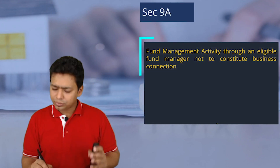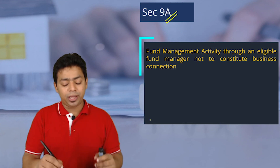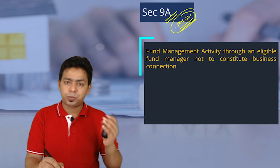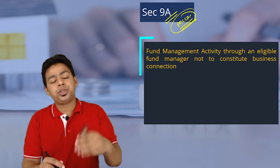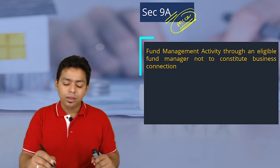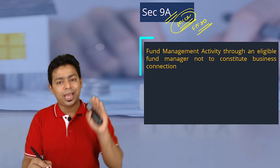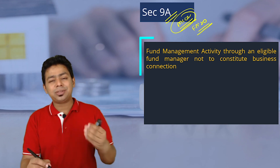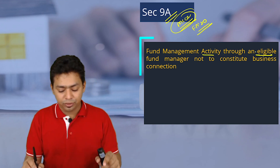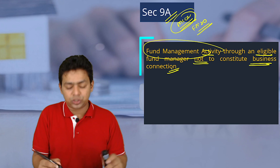So far, the institutes have not targeted Section 9A in exams. It is possible it may come in the form of a multiple choice question, because there are a lot of terminologies and numbers to remember. In Finance Act 2020, some of the provisions, numbers, and conditions of Section 9A were amended, and therefore it becomes a little important in the coming examination. The whole theme is: fund management activity through an eligible fund manager, of a foreign fund, not to constitute business connection.